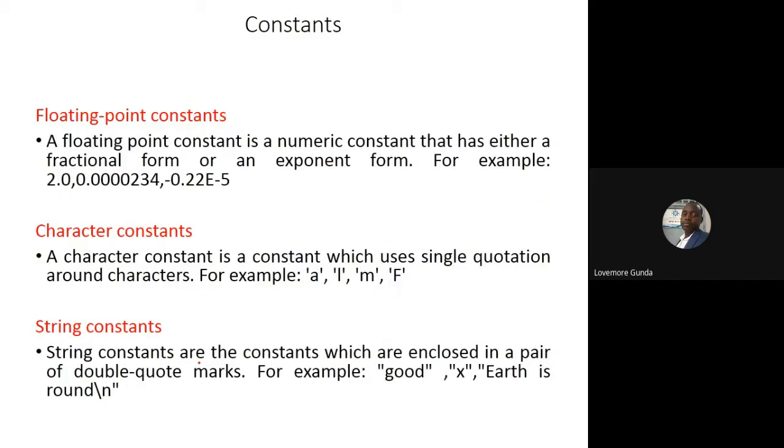Then also you have floating point constants. These can take the commas and the like. They take the fractional part of it. Then you have character constants, which means it's just one character, one letter. A string constant is a combination of more characters.